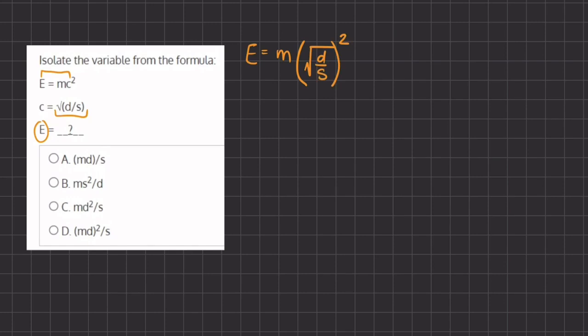Now when you have something in a square root and also raised to the power of 2, they cancel each other out. So it's going to look like this, we are going to have e equals m times d divided by s.